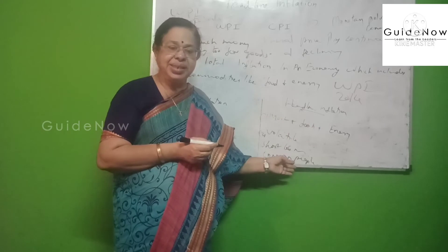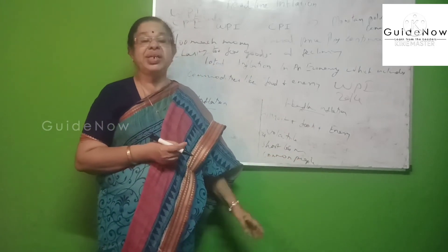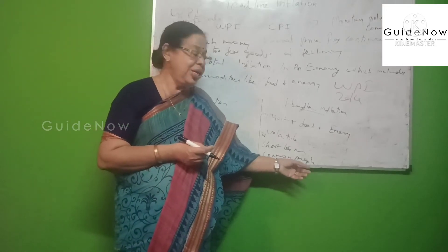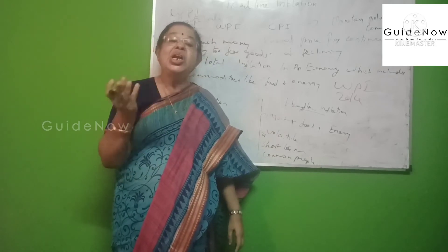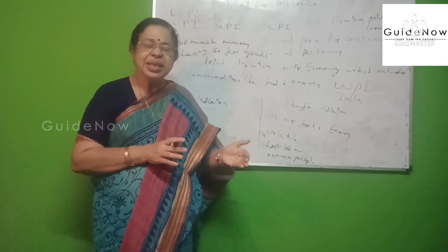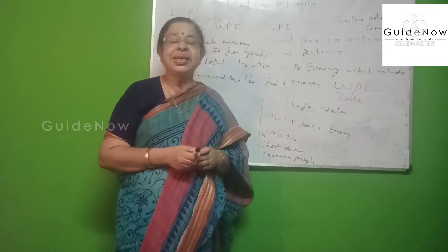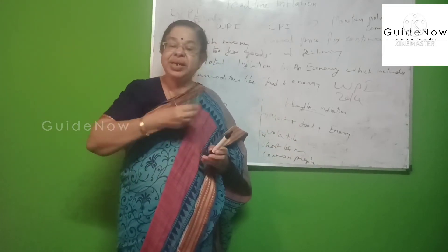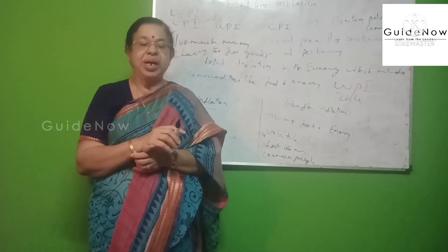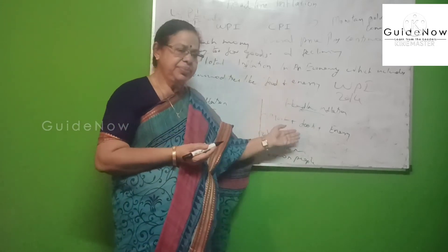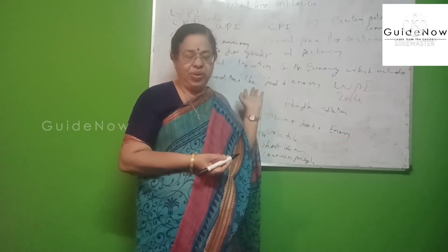Third characteristic is that headline inflation is short-term in character. It is very difficult to maintain stability — always fluctuating. Any small or pinpoint change creates a very short-term impact on pricing of food and energy. Fourth is that it mainly affects the common people — mainly lower and middle class. These are the four important characteristics of headline inflation.